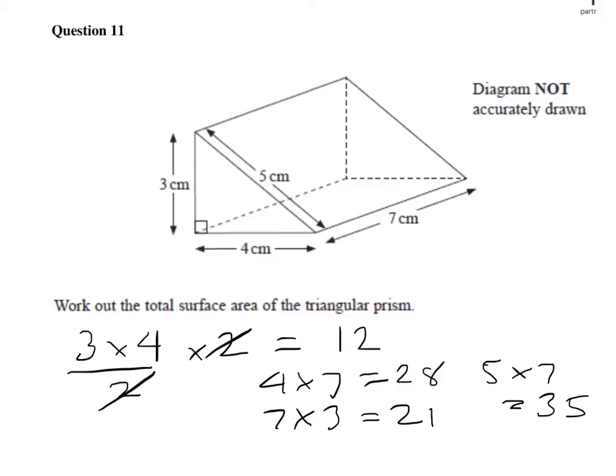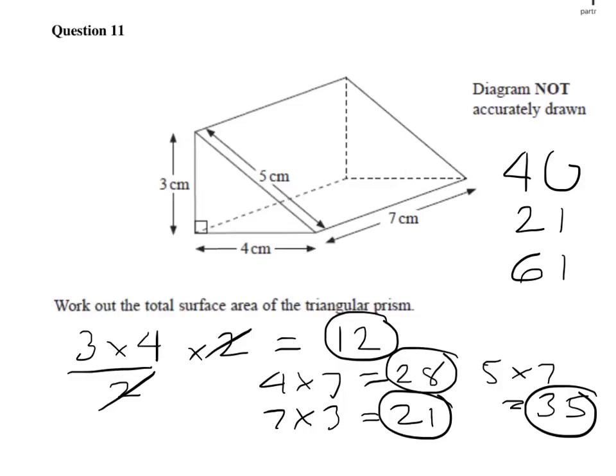So I'll circle everything we need to add up: our triangles, first rectangle, second rectangle, and third rectangle. Now 12 and 28 is 40, so we'll put that down as 40, plus 21 is 61, and then 61 and 35 gives me 96. So the total surface area of the triangular prism is 96 centimeters squared.